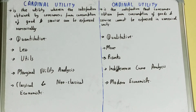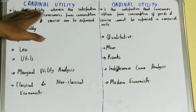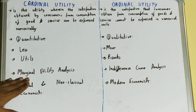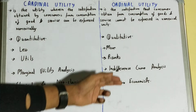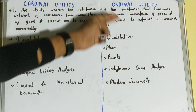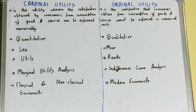If we talk about the analysis, cardinal utility is analyzed through marginal utility analysis, but ordinal utility is analyzed through indifference curve analysis.